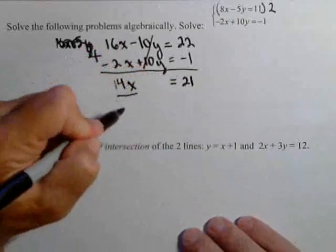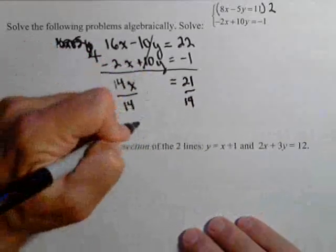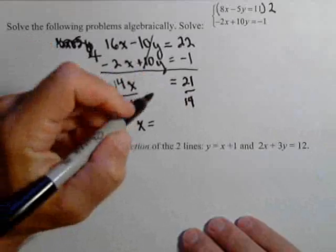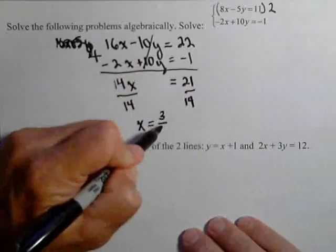I can now solve for x. So I'm going to divide both sides by 14. And I get x equals 21 over 14. Both those have a common factor of seven. So three halves.